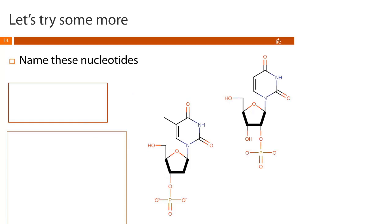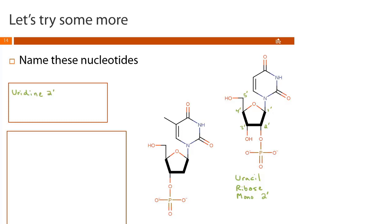For the nucleotide at the top right: the base is uracil, the sugar has the oxygen at the two-prime carbon so it's ribose, and there is a single phosphate at the two-prime position. A nucleoside from uracil and ribose is uridine. So the final name is uridine 2'-monophosphate.